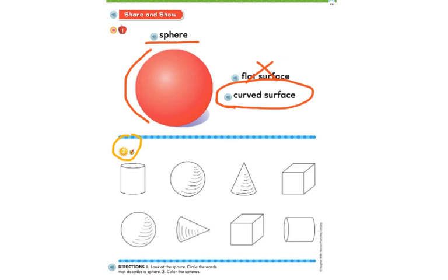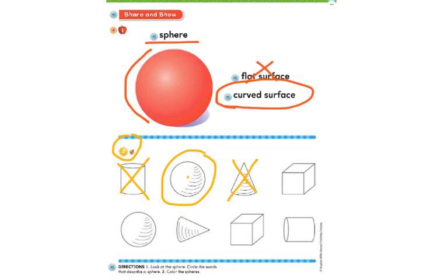Let's look at the very first shape right here. Is that a sphere? Nope, that's a cylinder. What about this one? Yes, it is — this is a sphere. The next one right here — we see a curved surface at the bottom, but the top is not curved, so we are going to cross that out. That is a cone. The next one has a lot of flat surfaces, and we know a sphere is curved, so this is not a sphere. It's a cube. Can you find the other sphere? You should have pointed to this one. So we have one sphere and two spheres.